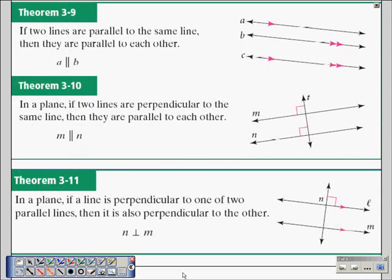Next we have, in a plane, if a line is perpendicular to one of two parallel lines, then it is also perpendicular to the other. From the diagram, line L is perpendicular to line N. Line L is parallel to line M. Therefore, we can conclude that line N is perpendicular to line M.